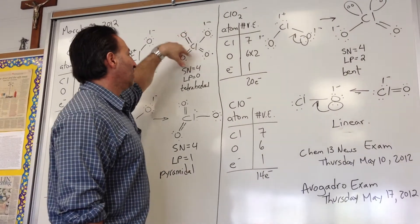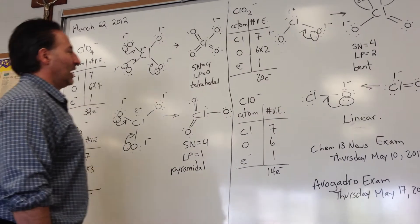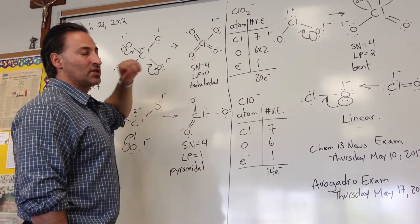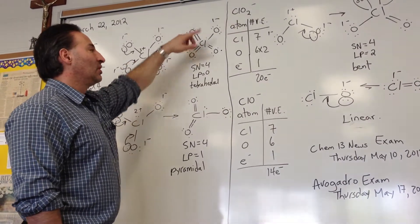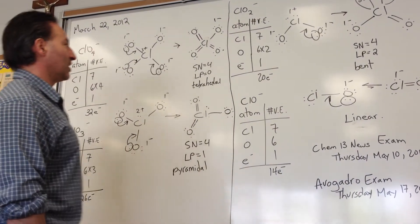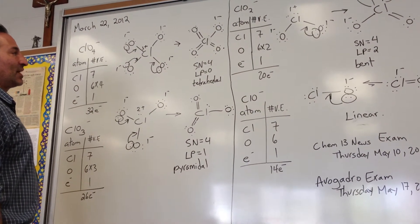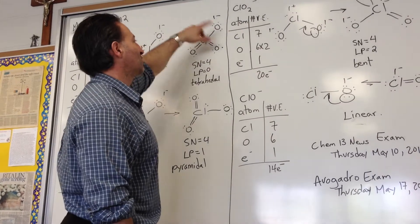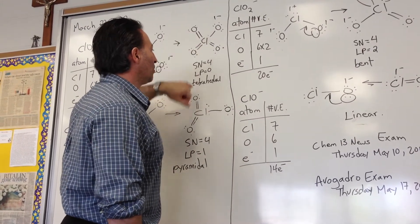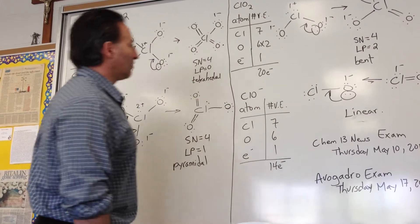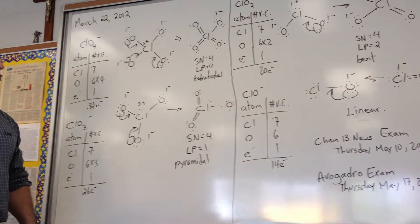In reality, this Lewis structure represents a molecule that has 7 bonds shared over 4 positions. So the bond character is 1 and 3 quarters between each chlorine and oxygen atom. What really counts when determining geometry is how many things are attached to the central atom — there are 4, so the steric number is 4. There are no lone pairs, and therefore VSEPR theory predicts that the molecular geometry of perchlorate is tetrahedral.